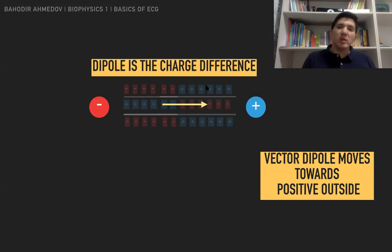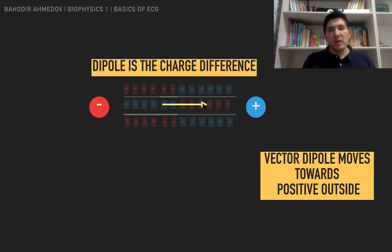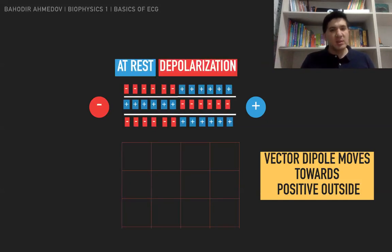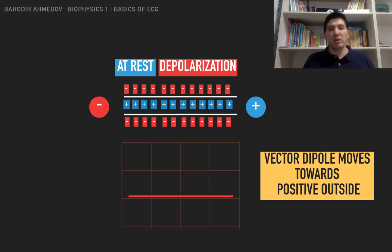This dipole vector is always going to move towards the positive outside. You can see that the positive membrane potential is on the outside, and the dipole moves in that direction — toward the positive electrode. That is why, if we measure this, we're going to have a positive deflection. After a couple of moments, the whole chain becomes depolarized, and if you measure the charge difference, you simply get zero — no charge difference. That is why you get a horizontal line.